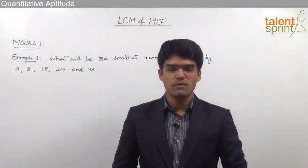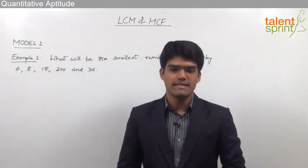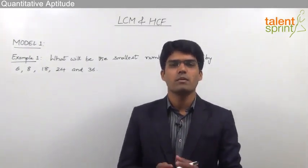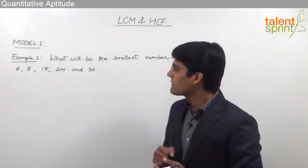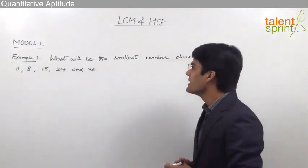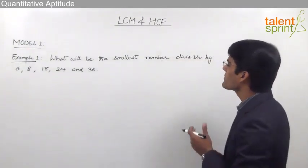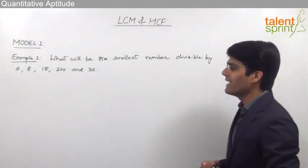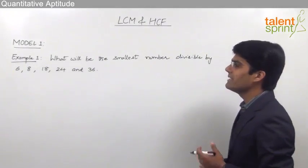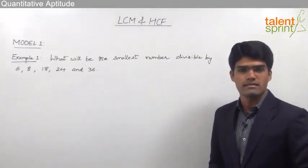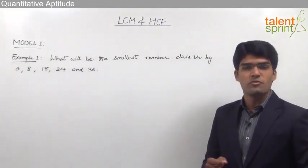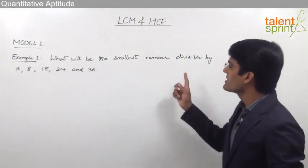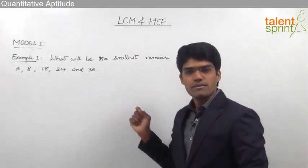Let us now take the first model from LCM and HCF where we are going to solve basic questions from this topic. The first example is: what will be the smallest number divisible by 6, 8, 18, 24 and 36? So we need to find out the smallest number which is divisible by all the given numbers.